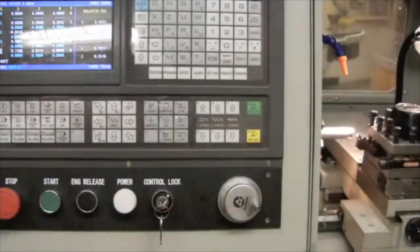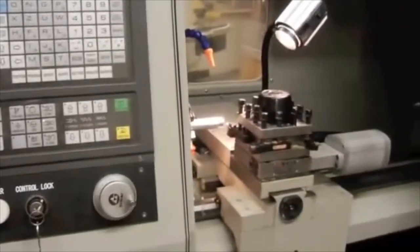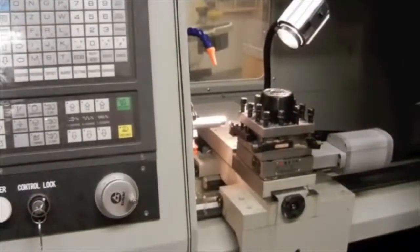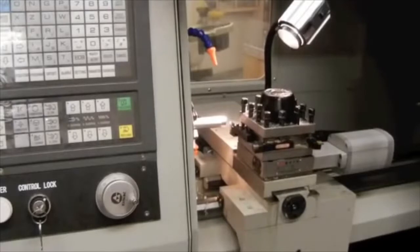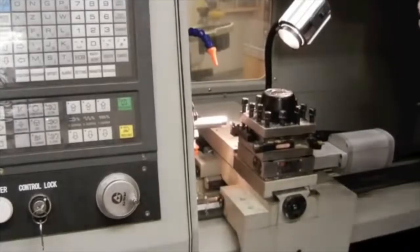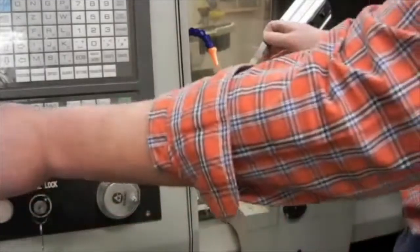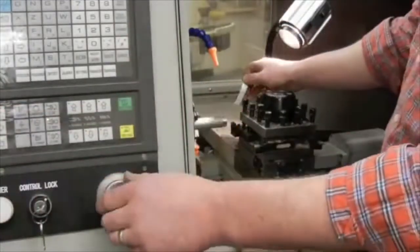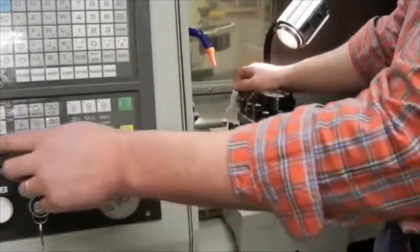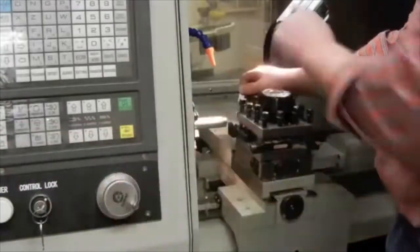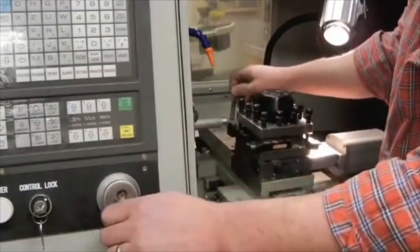The next step is for me to set my X offset. For this, I'm going to use a thin one one-thousandth thickness gauge. Once again, using the MPG hand wheel to position my cutter. The light is hot, so you may want to move it away from your hands.